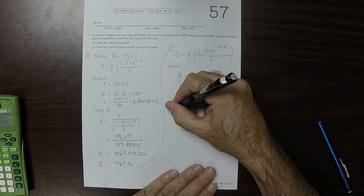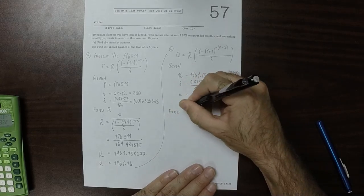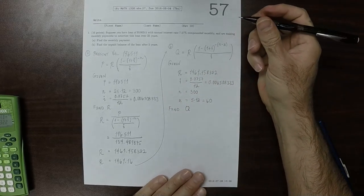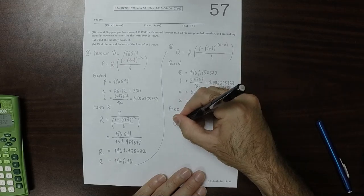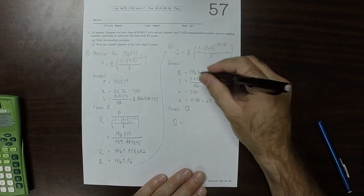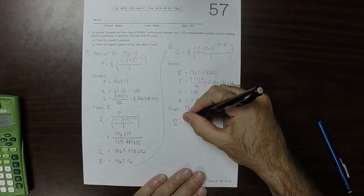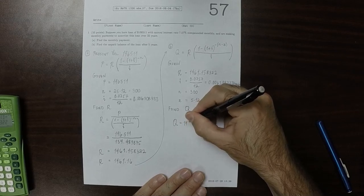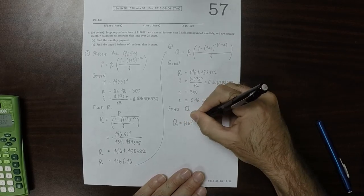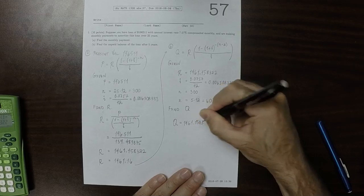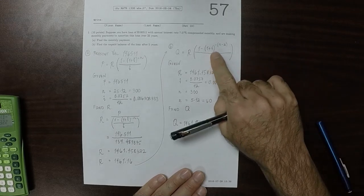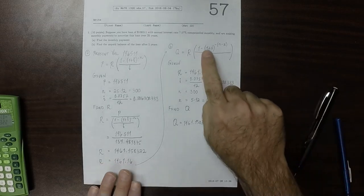So we want to find Q. Plugging that in, that'd be Q is this number, 1461.158322, and then multiplied by this number. So I'll plug that in.